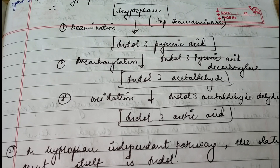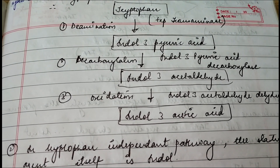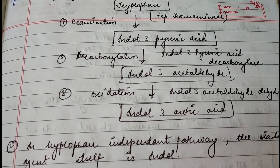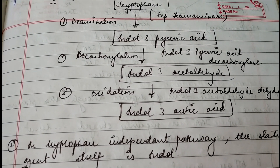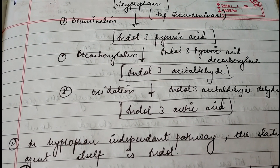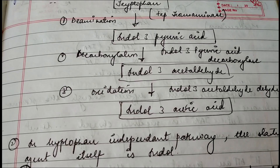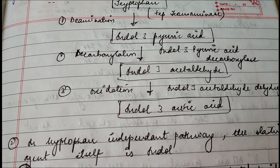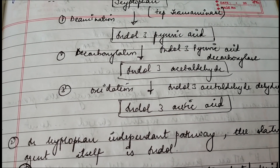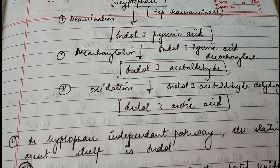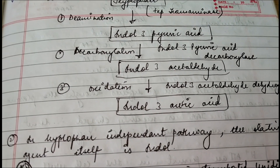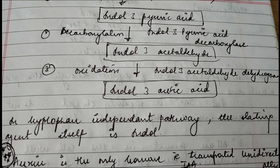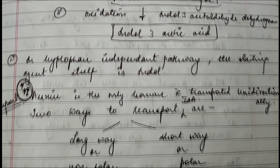After indole-3-pyruvic acid, indole-3-acetaldehyde is formed. This step is known as decarboxylation, and the enzyme is indole-3-pyruvic acid decarboxylase. In the third step, indole-3-acetaldehyde forms indole-3-acetic acid (IAA). This step is called an oxidation reaction, and the responsible enzyme is indole-3-acetaldehyde dehydrogenase.